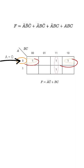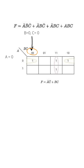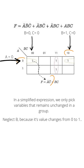In the first group, a is equal to zero throughout the group. In this cell, b is equal to zero and c is equal to zero. In this cell, b is equal to one and c is equal to zero. Here b changes, and we get a-bar dot c-bar with the help of this group.